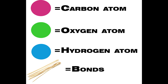For the molecular structure of ethanol, the magenta balls represent the carbon atoms, the green balls represent the oxygen atoms, the blue balls represent the hydrogen atoms, and the wooden sticks represent the covalent bonds.